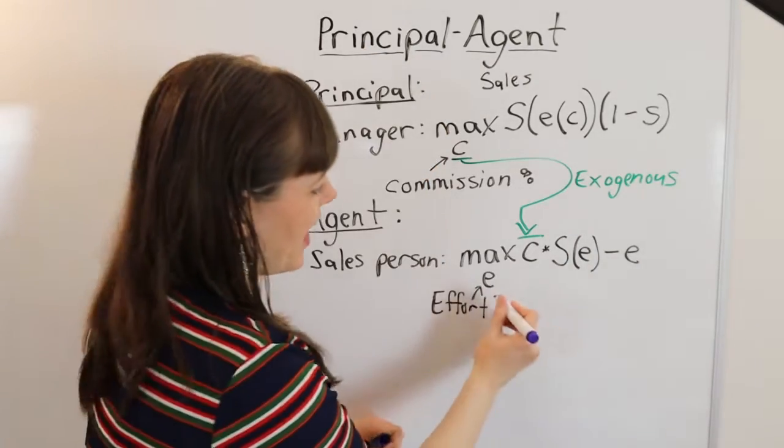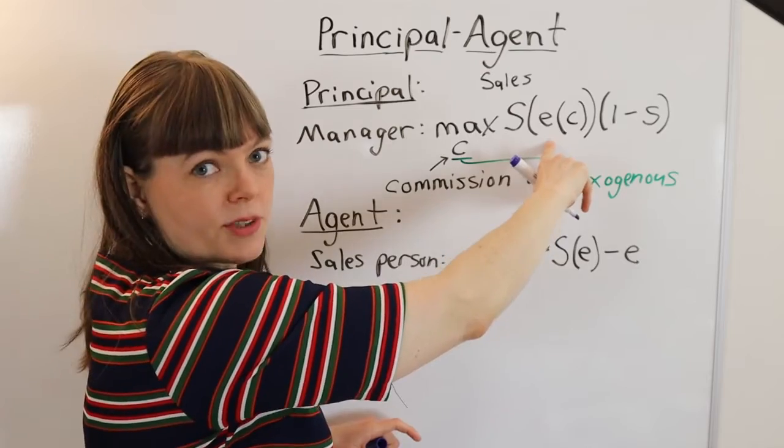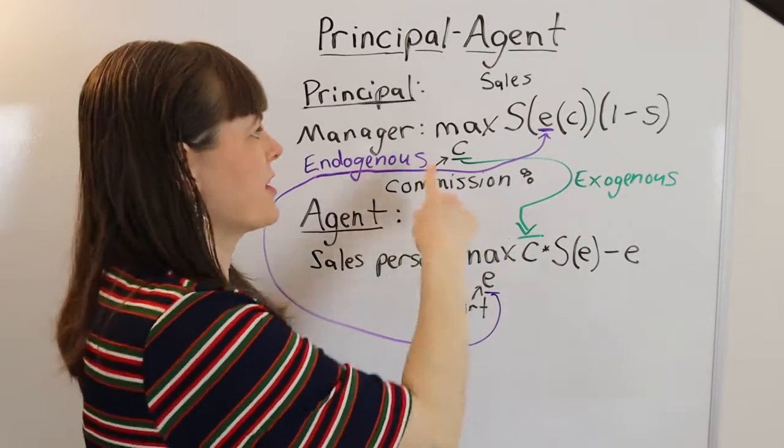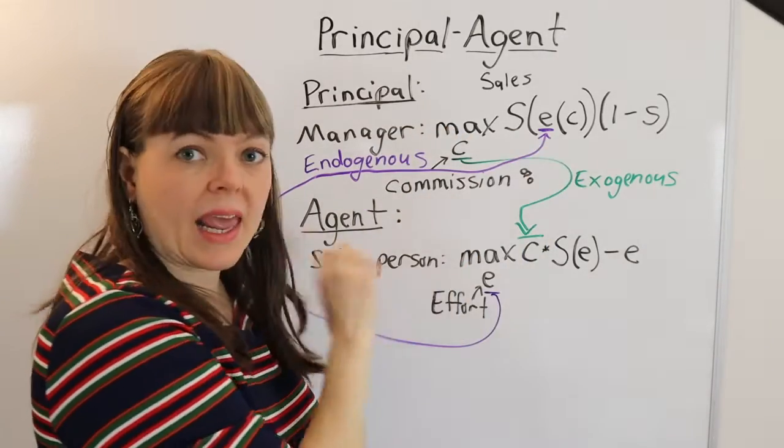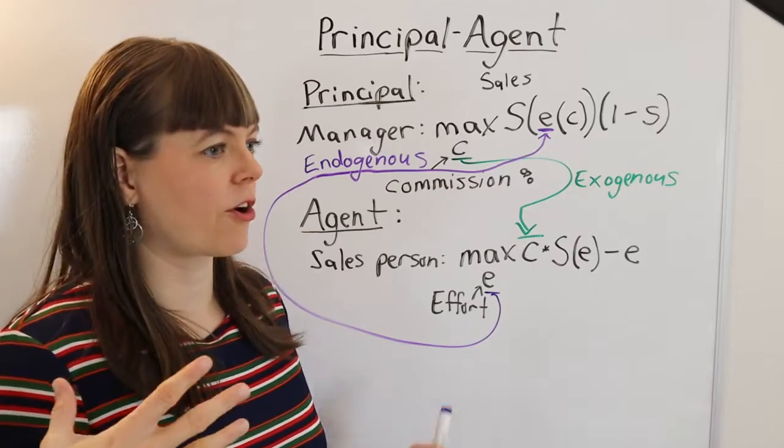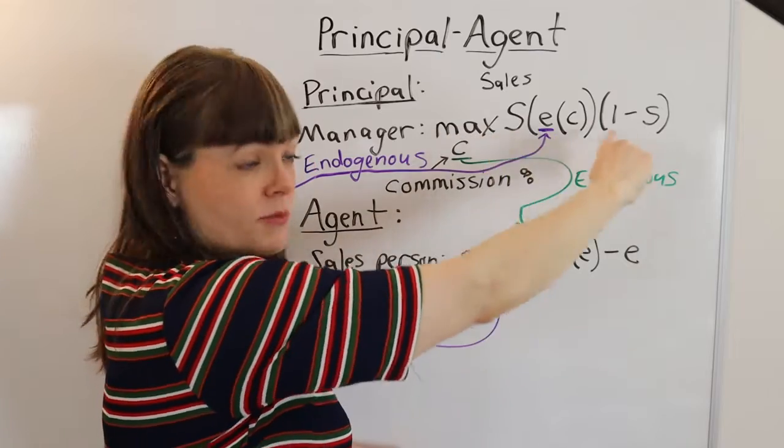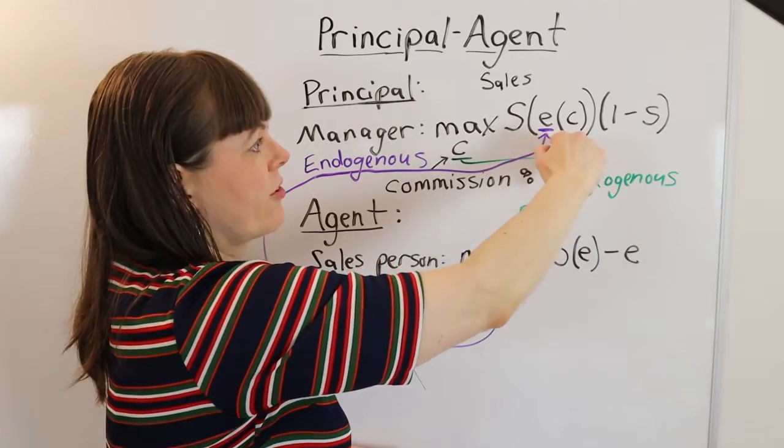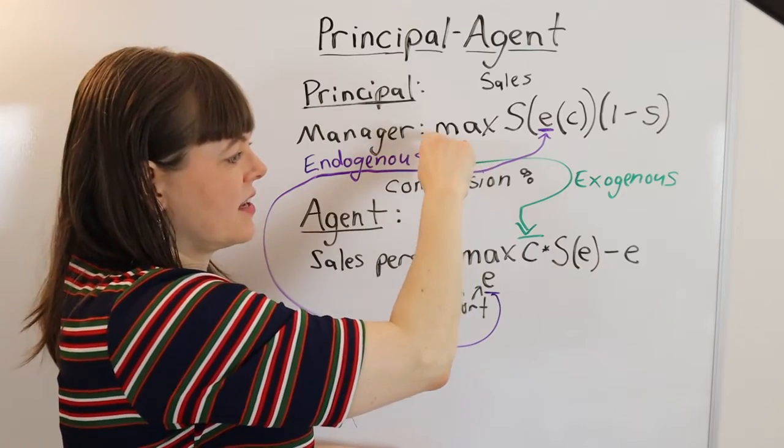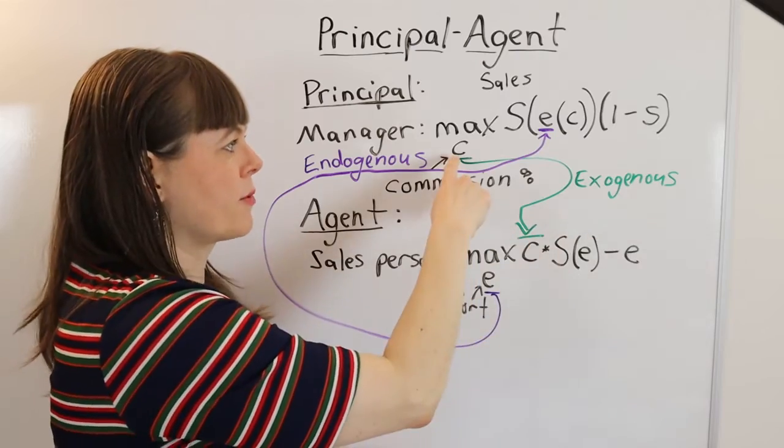And then the choice variable for the agent is going to be endogenous in the principal's model. So the basic setup here is that the principal cares about some behavior that the agent is doing, whether that's putting in effort or being really careful or whatever. The principal cares in their objective function about the agent's behavior, that effort. And their choice variable is something that is going to influence the agent through the agent's optimization problem.